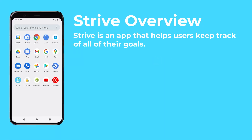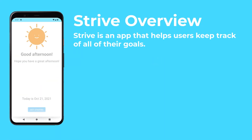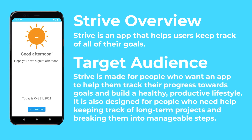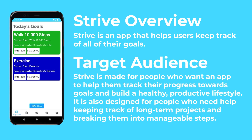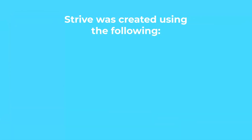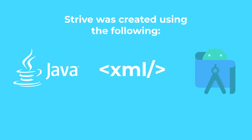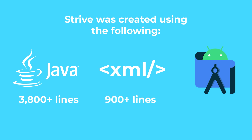Strive is an app that helps users keep track of all of their goals. It is made for people who want an app to help them track their progress towards goals and build a healthy, productive lifestyle. It is also designed for people who need help keeping track of long-term projects and breaking them into manageable steps. Strive is an Android app, so it was written using Java and XML in Android Studio, and it consists of over 3,800 lines of Java and over 900 lines of XML.